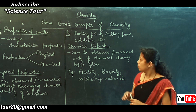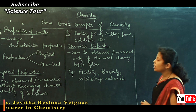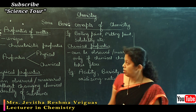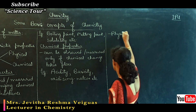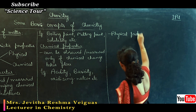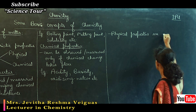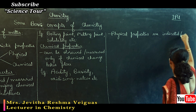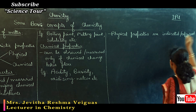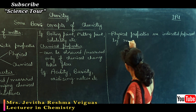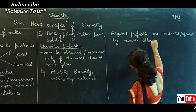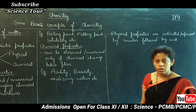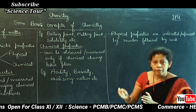So, matter has two types of properties: physical and chemical. Physical properties can be measured without changing the chemical composition or identity, but to observe chemical properties, a chemical reaction must take place. Whenever we measure physical properties, they are expressed by a number followed by a unit.